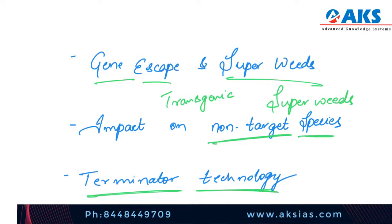Next is terminator technology. Terminator seeds are genetically engineered to be sterile after their first harvest. This forces farmers who otherwise saved seeds for the next season to purchase them if they wish to use these improved commercial varieties, thus leading to more burden on the farmers.